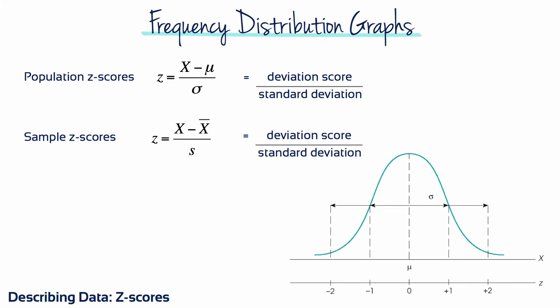The formula for transforming scores into z-scores is z equals x minus mu divided by sigma. The numerator of the equation, x minus mu, is a deviation score. It measures the distance in points between x and mu, and indicates whether x is located above or below the mean. The deviation score is then divided by sigma, because we want the z-score to measure distance in terms of standard deviation units.